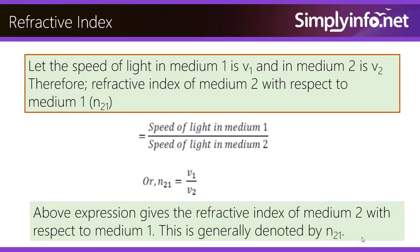Let the speed of light in medium 1 be V1 and in medium 2 be V2. Therefore, the refractive index of medium 2 with respect to medium 1, N21, is equal to the speed of light in medium 1 divided by the speed of light in medium 2, or N21 = V1 / V2. This expression is generally denoted by N21.